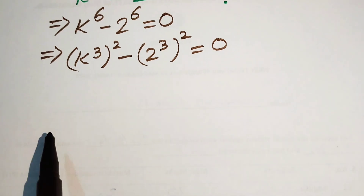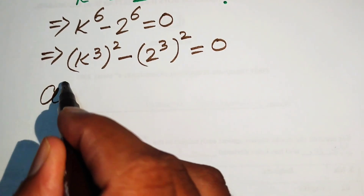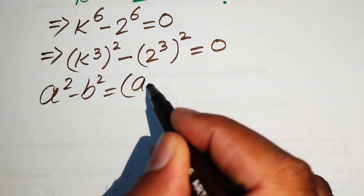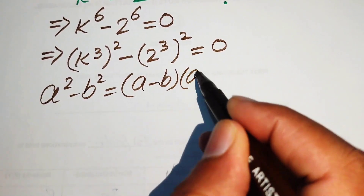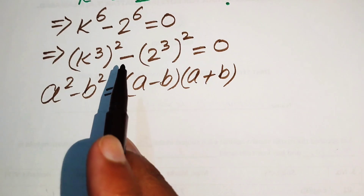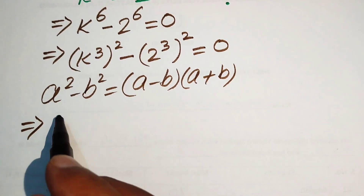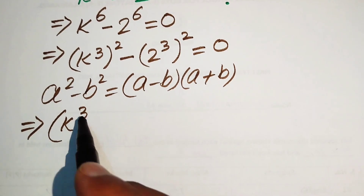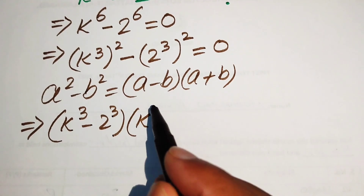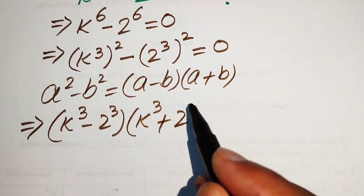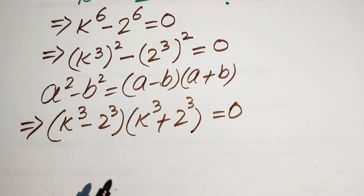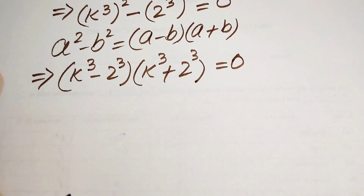Here we apply the difference of squares identity. You know this identity: if we have a squared minus b squared, it equals a minus b times a plus b. We use this formula on the above term, so it is written as k cubed minus 2 cubed, times k cubed plus 2 cubed, equals 0. So here we have two cases.